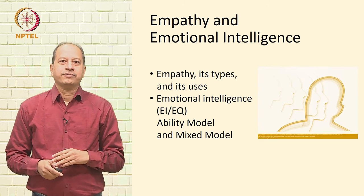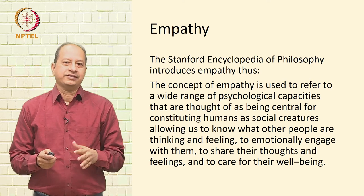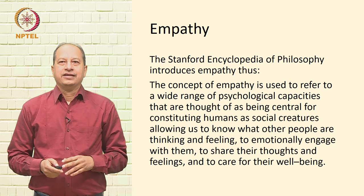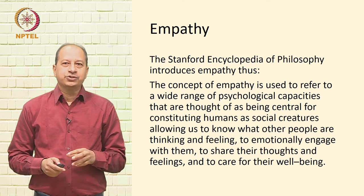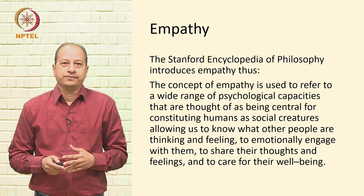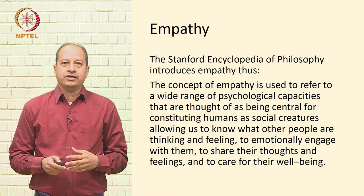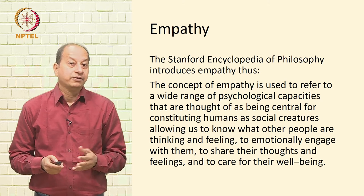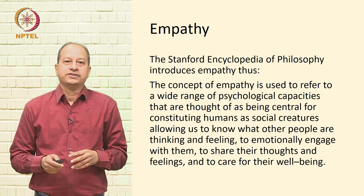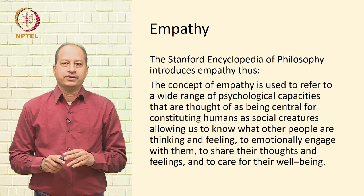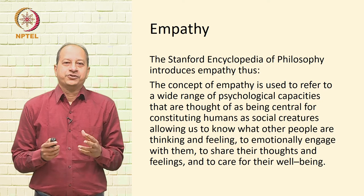Let's look at the first component: empathy. The Stanford Encyclopedia of Philosophy introduces empathy as follows: the concept of empathy is used to refer to a wide range of psychological capacities that are thought of as being central for constituting humans as social creatures, allowing us to know what other people are thinking and feeling, to emotionally engage with them, to share their thoughts and feelings, and to care for their well-being.